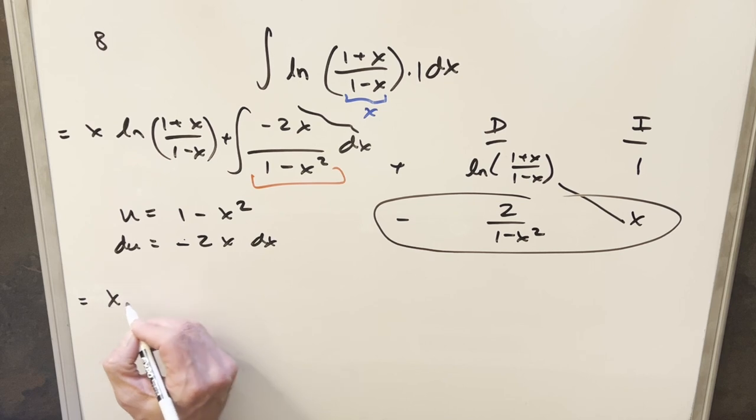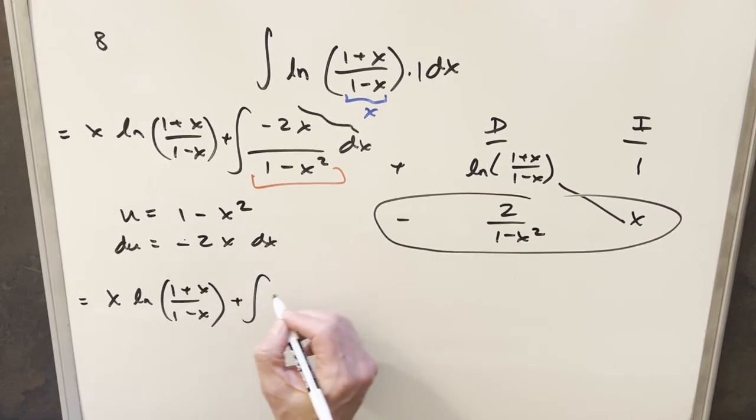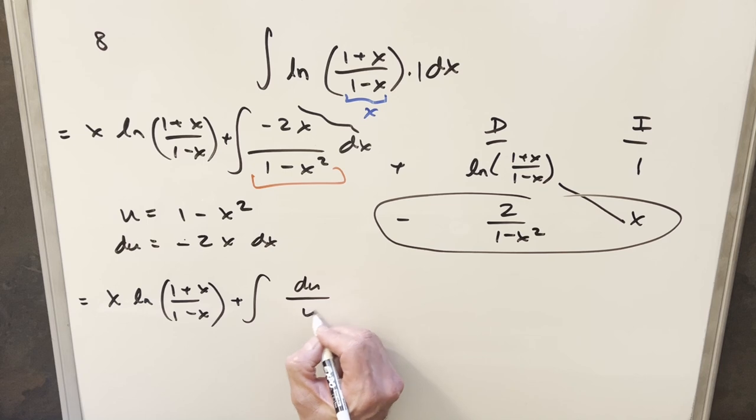So then coming down here, we'll rewrite everything and we'll make the substitution. So then for this integral in u, the numerator becomes du and the denominator is just u.